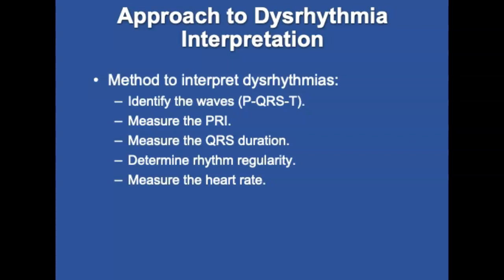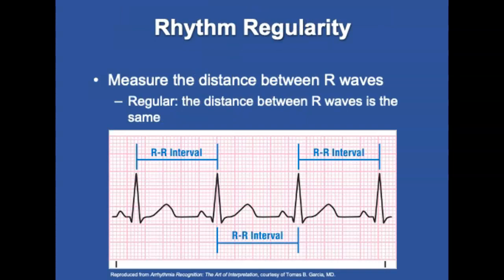Also make a notation of whether the P waves are upright and fall within normal parameters. When it comes to rhythm regularity, you want to determine whether it's regular, and it can be done by simply measuring the distance between those R waves. When the rhythm is regular, the distance between the R waves is exactly the same, as you can see on the slide — you have a regular rhythm.